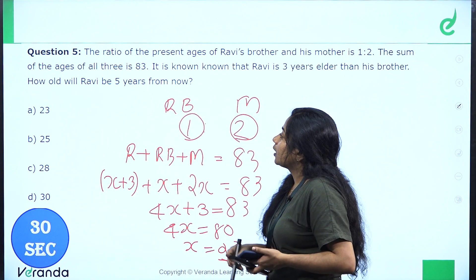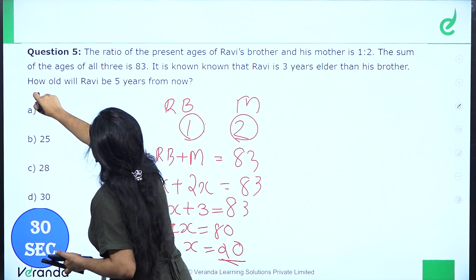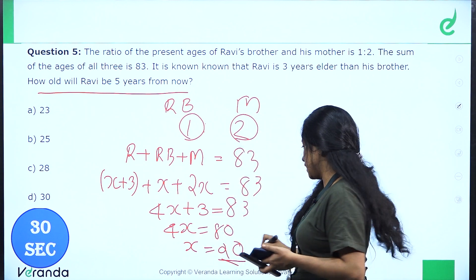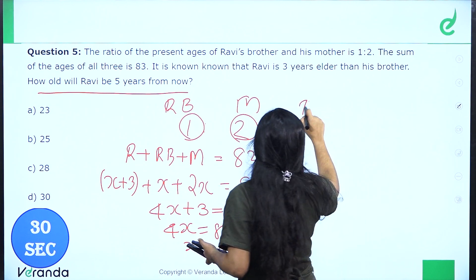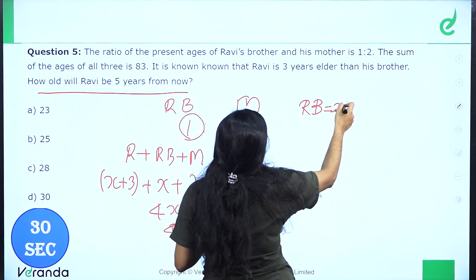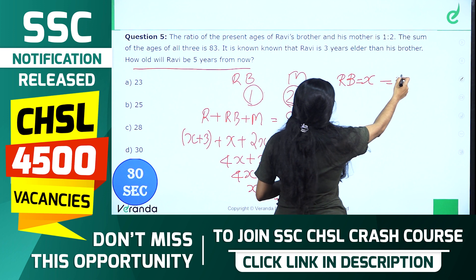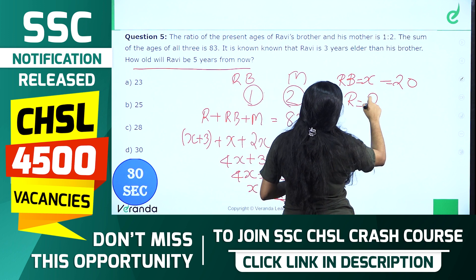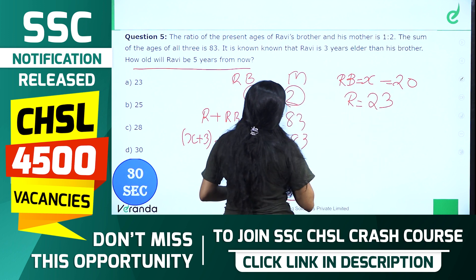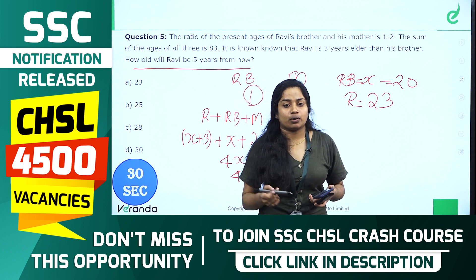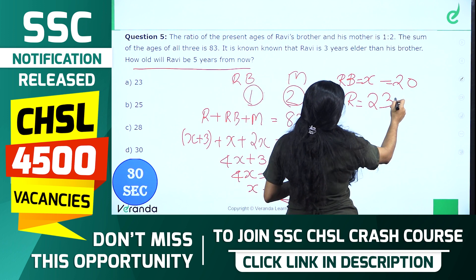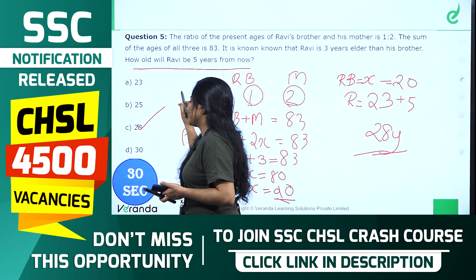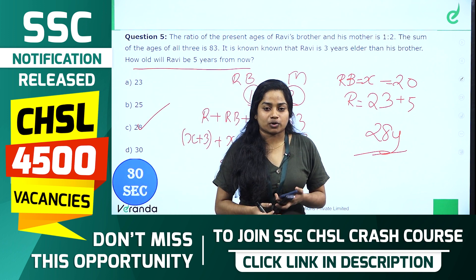So Ravi's brother's age is 20. Ravi's age is X plus 3, which equals 23. The question asks: how old will Ravi be 5 years from now? Ravi's current age is 23, so 5 years from now Ravi will be 28 years old.